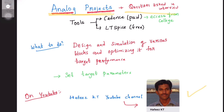The software which can be used for analog VLSI projects are Cadence or LTSpice. Cadence is paid, but most colleges will give free access to students, so check with your college if you have free access to Cadence. If not, you can use LTSpice.